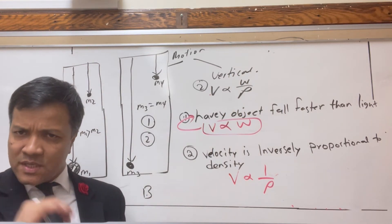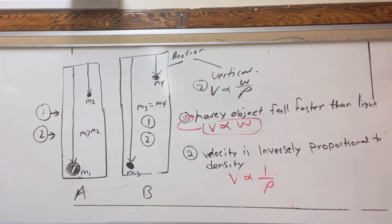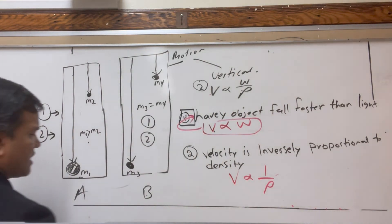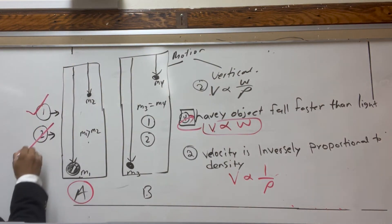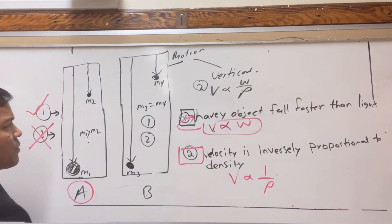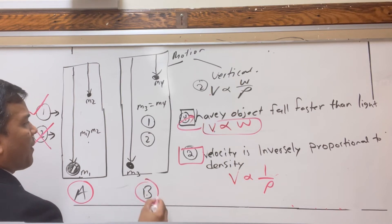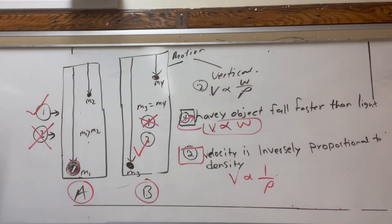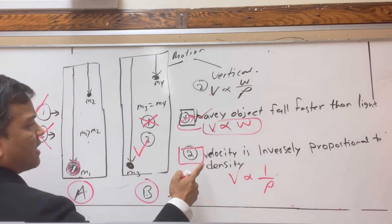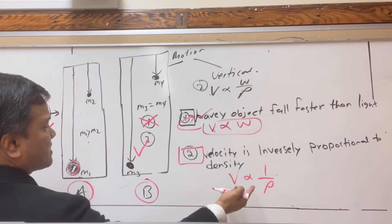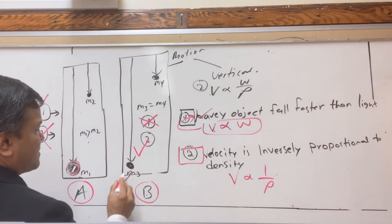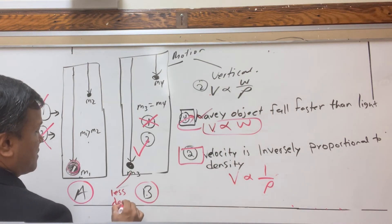The idea presented in equation 1 implies diagram A — check. The idea presented in equation 2 implies diagram B — check. Because heavy objects fall faster than light objects, the heavy object falls faster. For density, the more dense object falls slower than the less dense. For example, water is 1,000 times more dense than air; air is only about 1.2 kilograms per cubic meter.